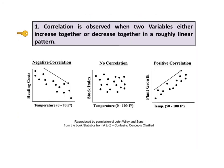Okay, let's begin our detailed look into each key. The first key to understanding tells us that correlation is observed when two variables either increase together or decrease together in a roughly linear pattern. Correlation is negative when larger values for one variable are paired with smaller numbers of the other.